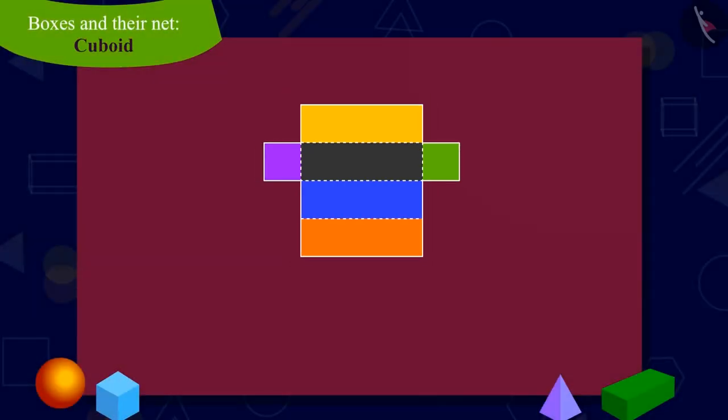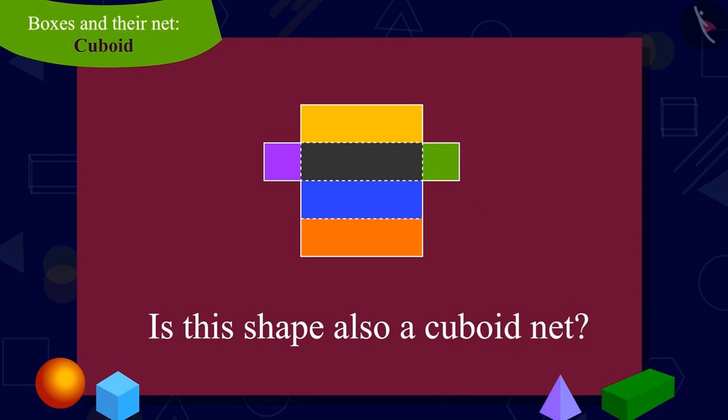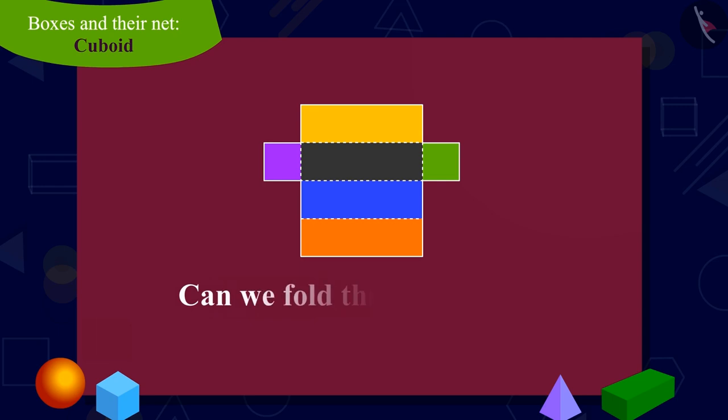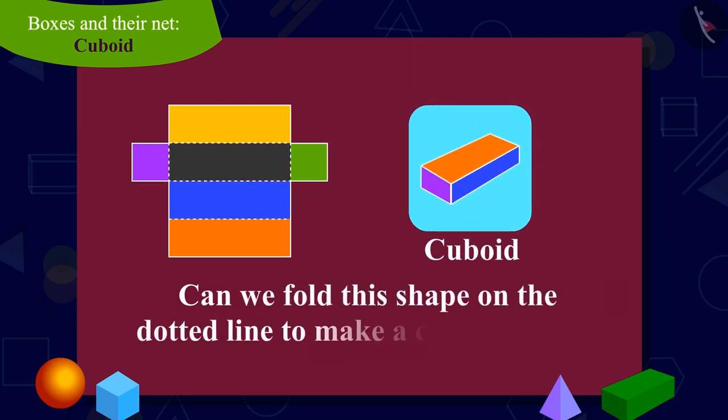Children, look at the shape of this cutout and answer. Is this shape also a net of a cuboid? In other words, can we make a box shaped like a cuboid by folding this cutout on the dotted line? You can find the answer to this question by pausing the video.